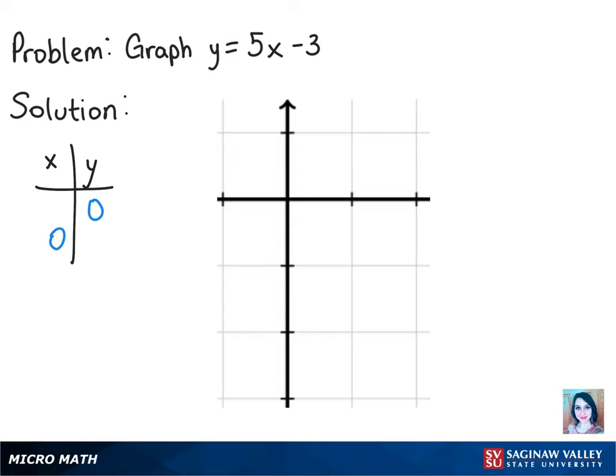When x is 0, what we have left is negative 3 from the equation. And then when y is 0, then we end up getting 3 fifths for x. So these are our new coordinates.